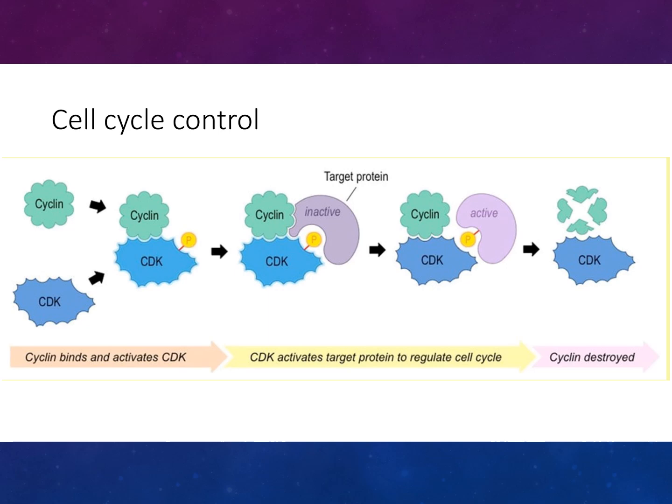Here's a diagram showing how cyclin binds to the cyclin-dependent kinases, resulting in an active protein, and then cyclin being destroyed. Cyclin binds and activates the cyclin-dependent kinase. The cyclin-dependent kinase then activates the target protein that regulates the cell cycle, and the cyclin is subsequently destroyed.